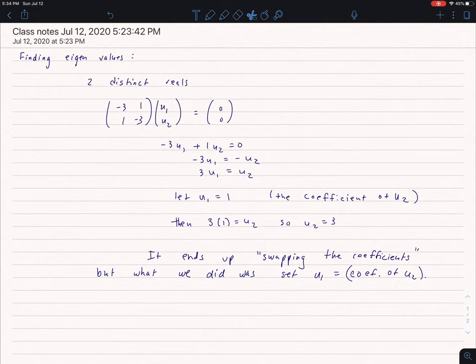What I said in the video is, what would happen if I just let u1 equal what the coefficient of u2 was? Well if I did that, if I let u1 in this case equal 1, because that's what's multiplying by u2, that's the numerical coefficient of u2. If I do that, then if I plug it into the equation, I find that u2 simply equals 3.